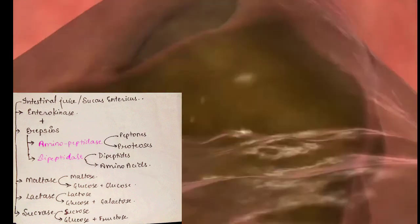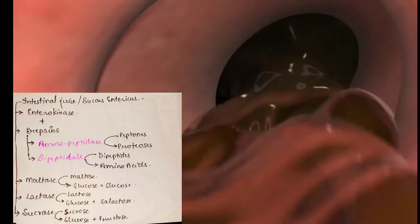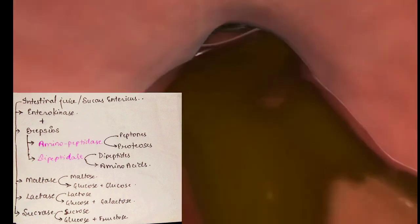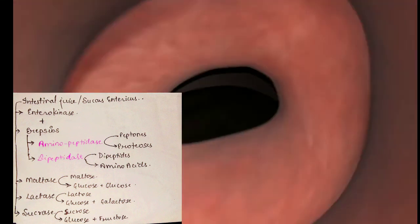Intestinal juice has maltase, lactase, and sucrase to break down maltose, lactose, and sucrose simultaneously into glucose, galactose, and fructose.